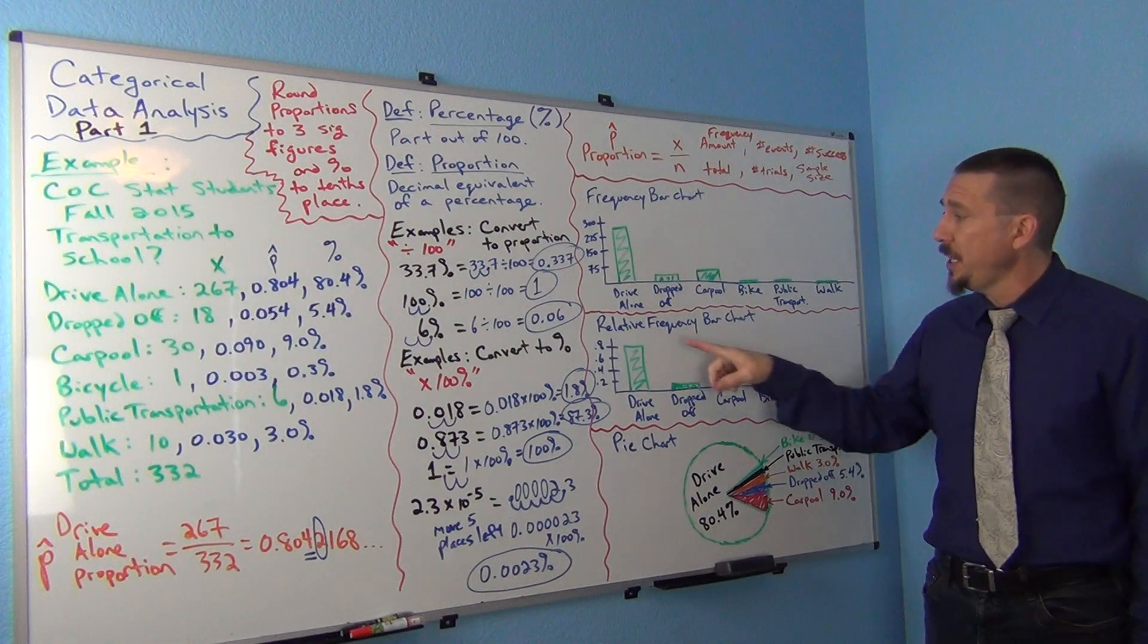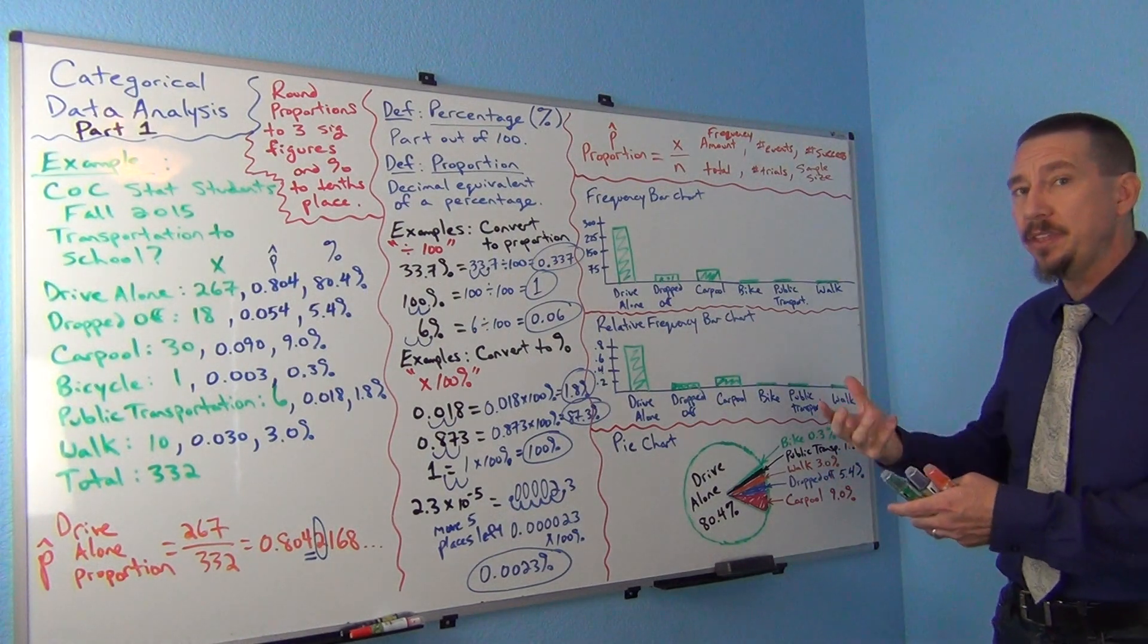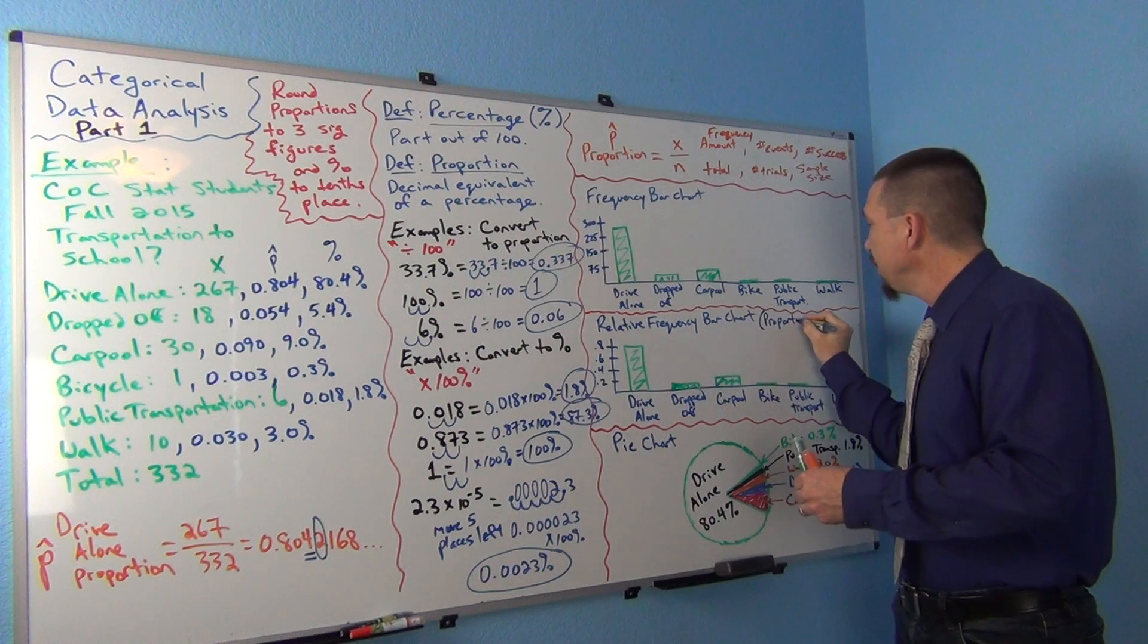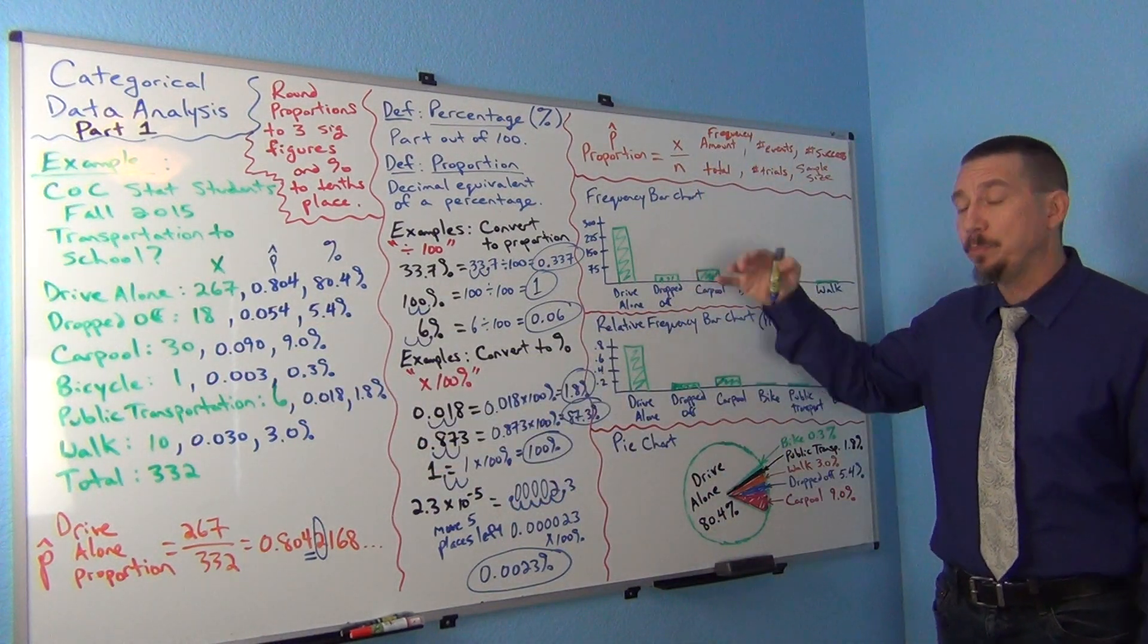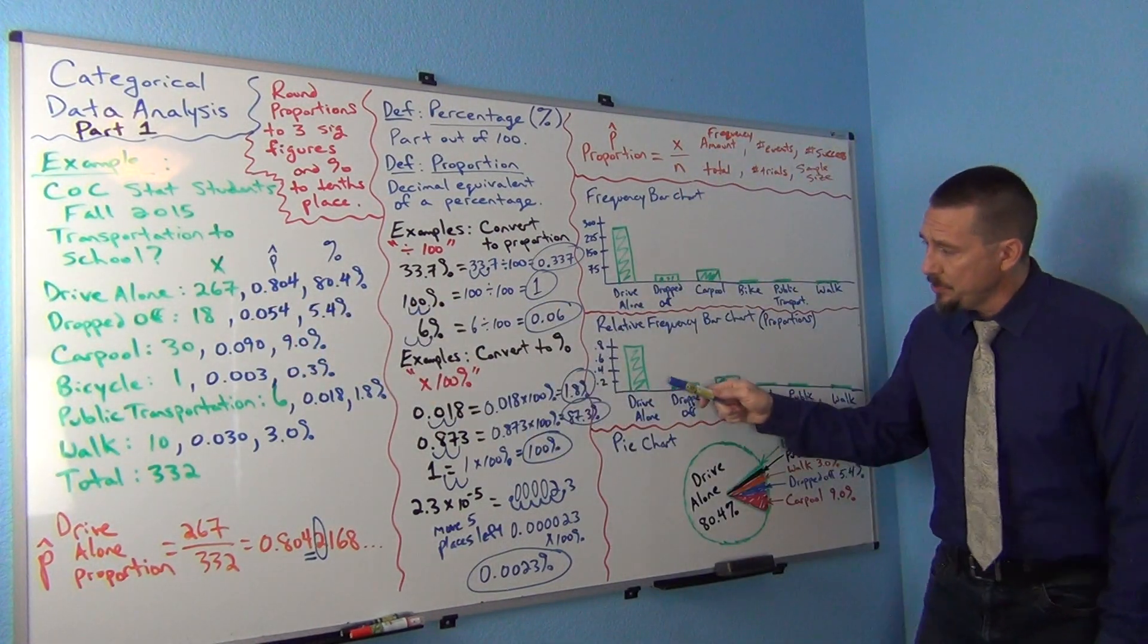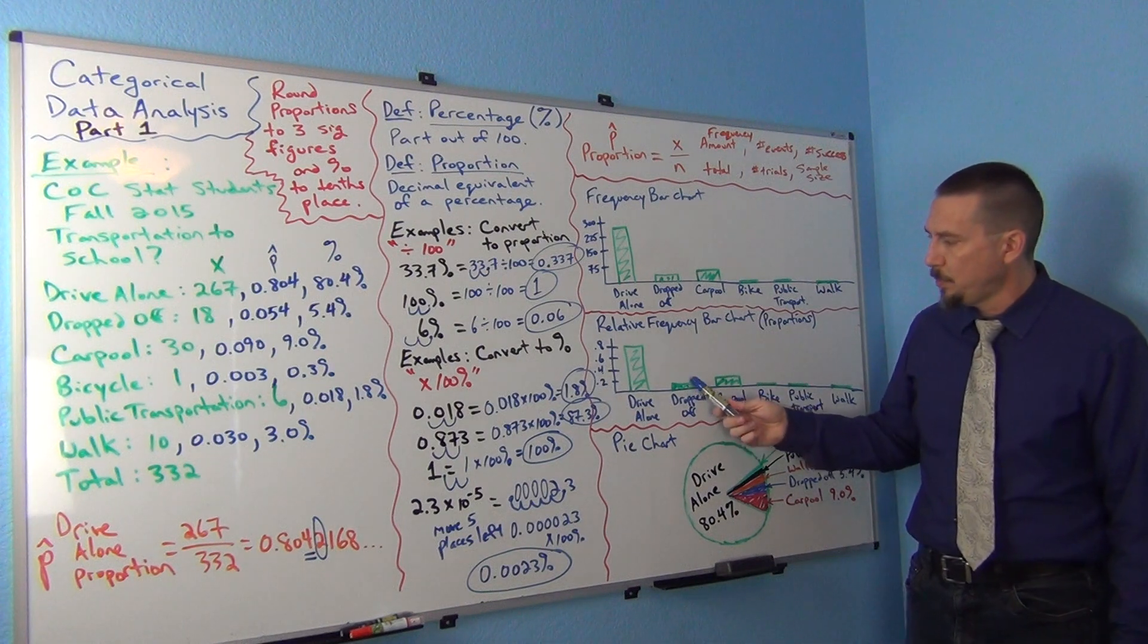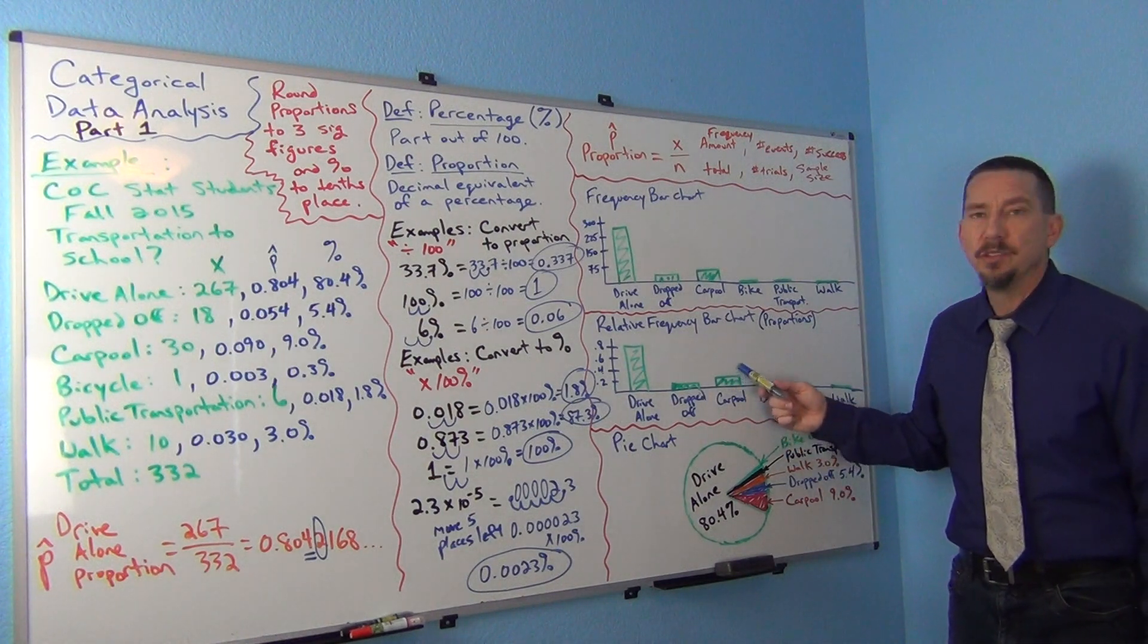Now you can also see something called a relative frequency bar chart. A relative frequency bar chart, what that means is they convert everything to proportion. So think of a relative frequency bar chart as they're really converting to proportion. So they're using the p-hats. So the p-hats that we calculated here, the bars are going to go up to that proportion. So if you notice, the proportion for drive alone was 0.804. And you'll see this bar goes up to 0.804. And then for dropped off, the proportion was 0.054. So you can see this bar goes up to 0.054. And carpooling was 0.090. So this bar goes up to 0.090.